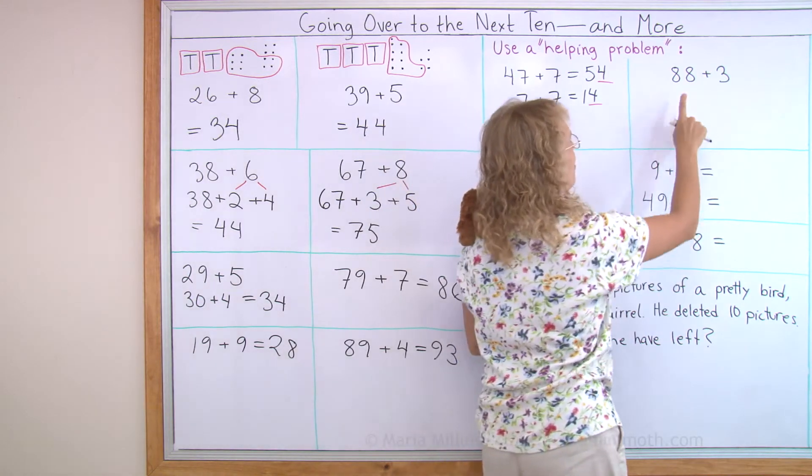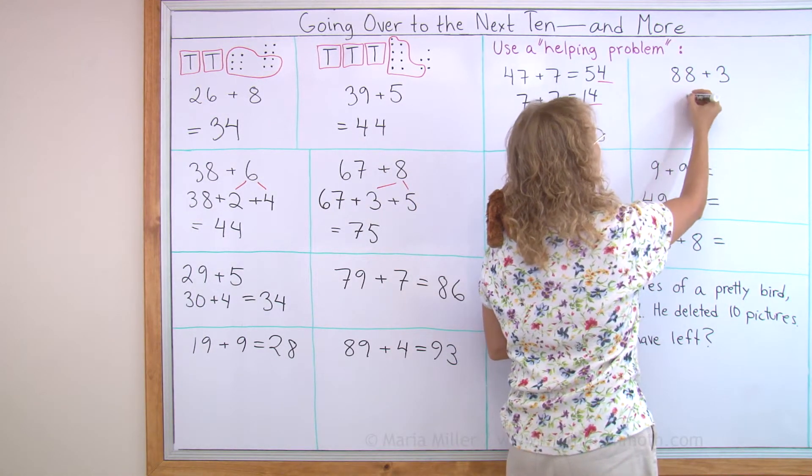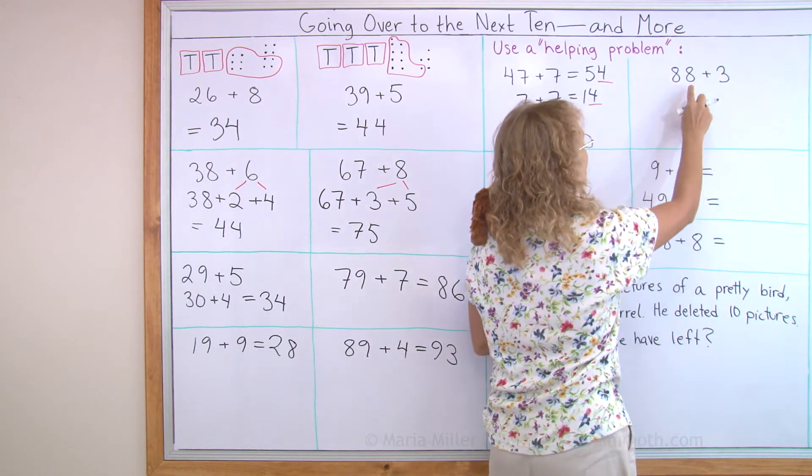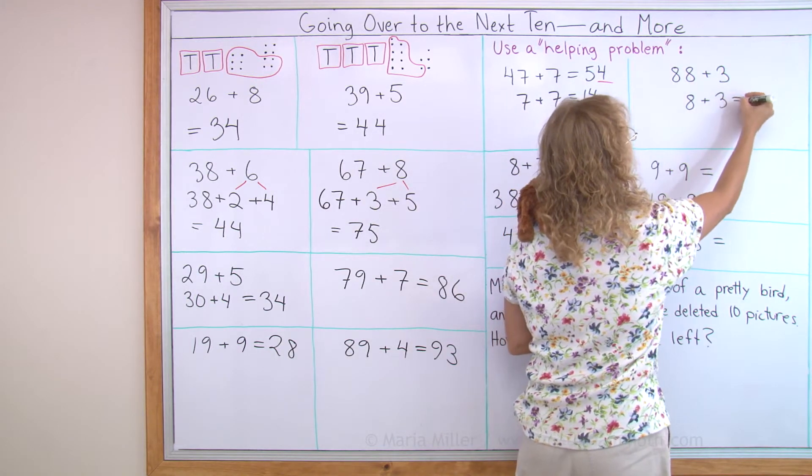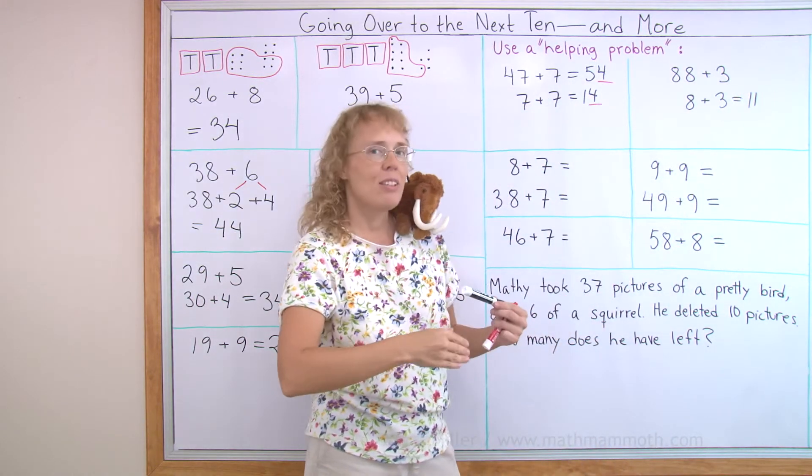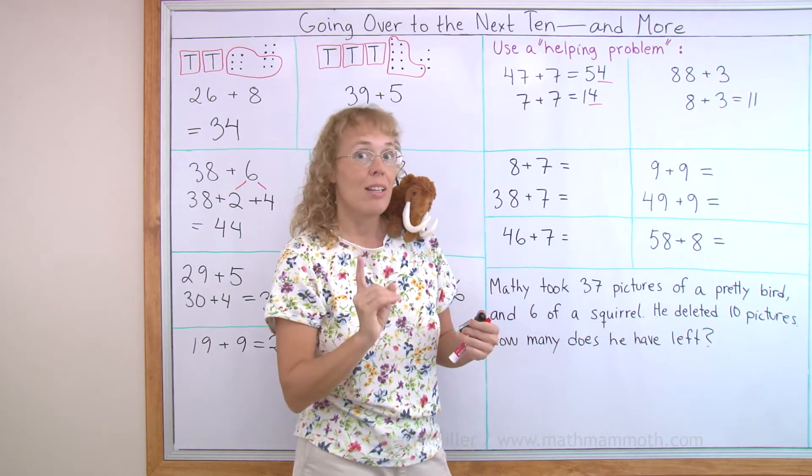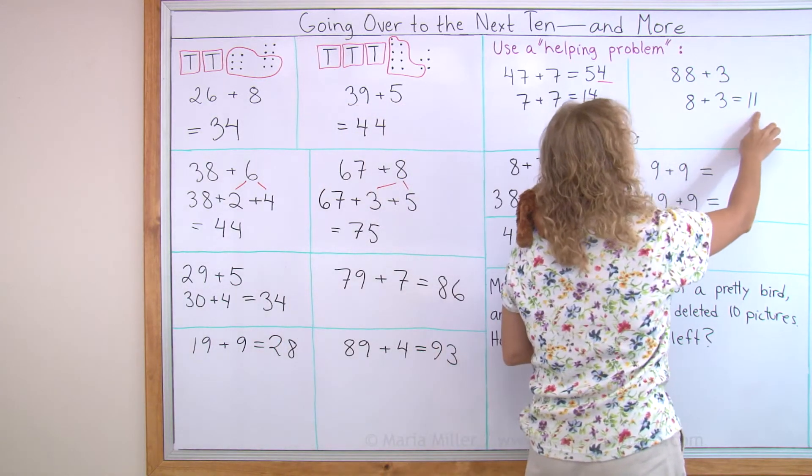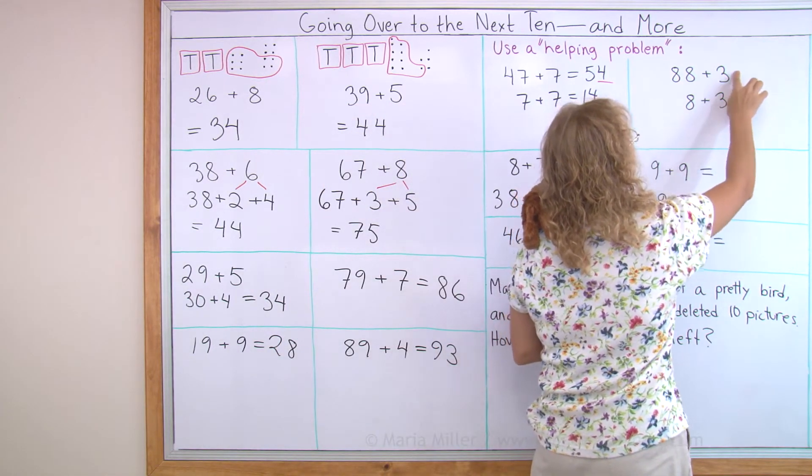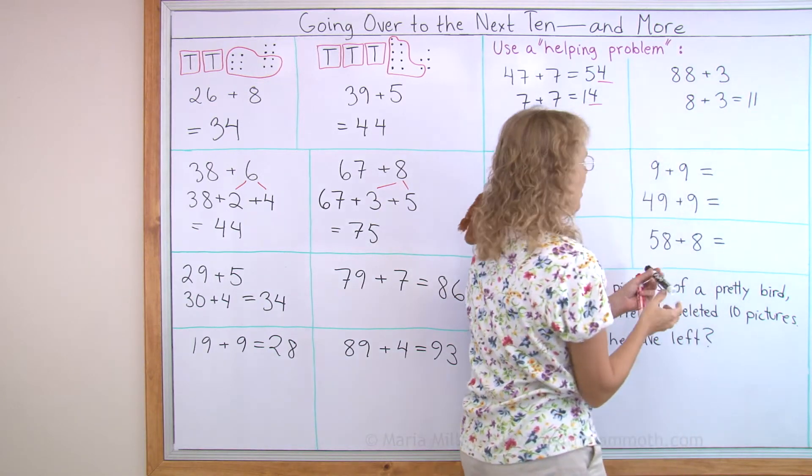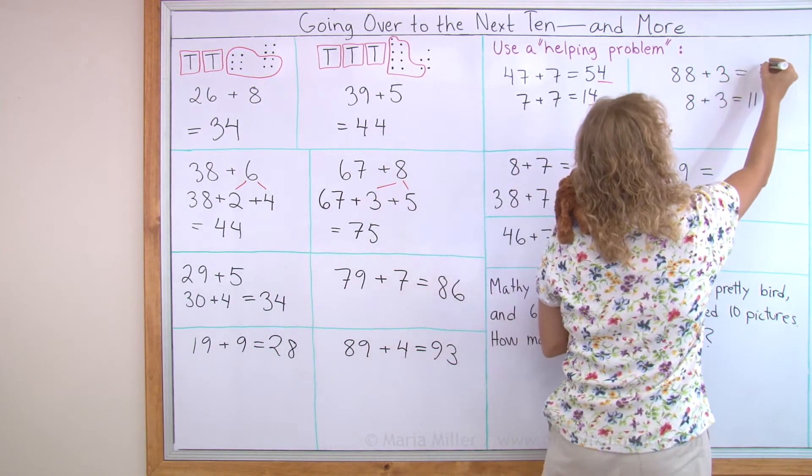I'll show you over here too. 88 plus 3. My helping problem is just the one's digits: 8 plus 3 equals 11. And I think, okay, that went over the 10 by 1 dot or by 1. And so this also will go over to the next 10 by 1. The answer will be 91.